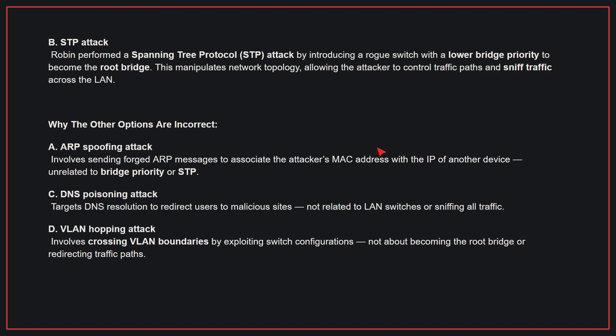The correct answer is B. STP attack. Robin performed an STP attack by introducing a rogue switch with a lower bridge priority to become the root bridge. This manipulates network topology, allowing the attacker to control traffic paths and sniff traffic across the LAN. Why the other options are incorrect? A. ARP spoofing — this involves sending forged ARP messages to associate the attacker's MAC address with the IP of another device, unrelated to bridge priority or STP. C. DNS poisoning — this targets DNS resolution to redirect users to malicious sites, not related to LAN switches or sniffing all traffic. D. VLAN hopping — this involves crossing VLAN boundaries by exploiting switch configurations, not about becoming the root bridge or redirecting traffic paths. Therefore, the correct answer is B.